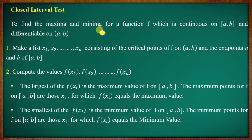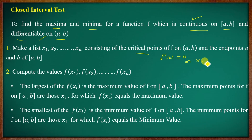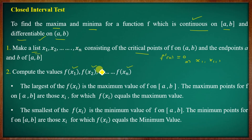Closed interval test: Find the maximum and the minimum of a function f which is continuous on the closed interval [a, b] and differentiable on the open interval (a, b). Make a list x₁, x₂, ..., xₙ consisting of critical points. Critical point is where f'(x) equals 0. We use x₁, x₂, x₃ in the list, including the endpoints a and b.